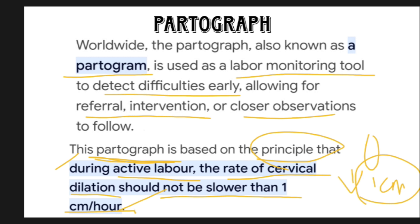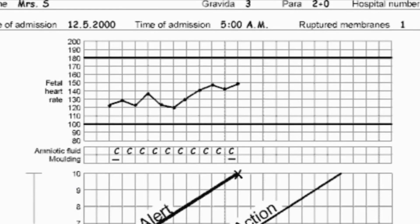This is how the partograph looks, and these are the elements that are seen here. First is fetal heart rate. At the time of delivery, the fetus is inside the mother's womb, and they will place the sensor to find the fetal heart rate. This fetal heart rate is actually detected per hour. From this point to this point, this gap is per hour. Each hour the fetal heart rate is checked and marked. Second is amniotic fluid. Here, amniotic fluid is also checked per hour, and C indicates clear, meaning the amniotic fluid releasing from the vagina is clear.